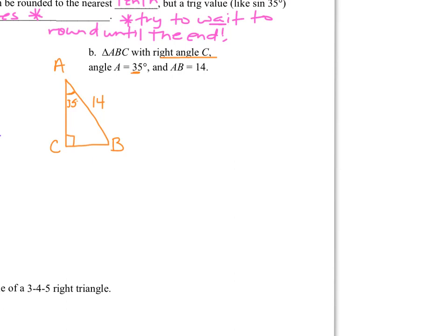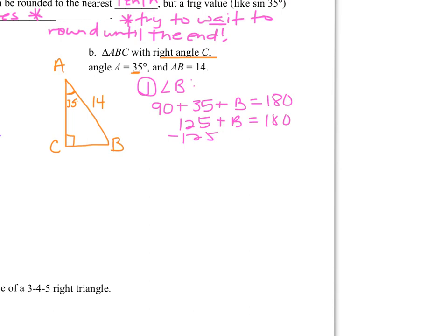We know two angles and one side, so we know three things and need to solve for the other three. We can find angle B quickly using the triangle sum rule: 90° + 35° + angle B = 180°. 90 + 35 is 125, so angle B = 180 − 125 = exactly 55 degrees. Those are the nice ones to work with.